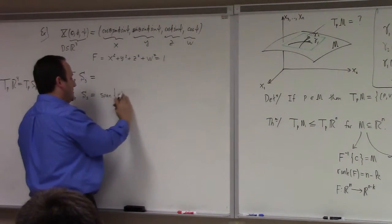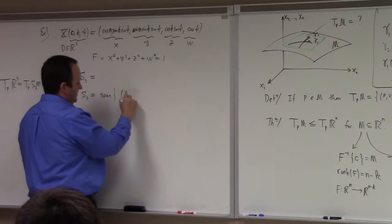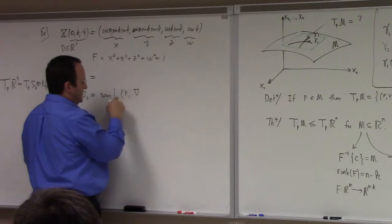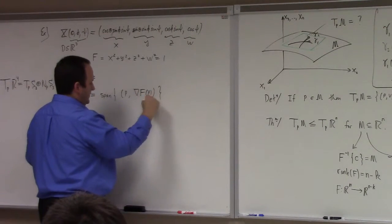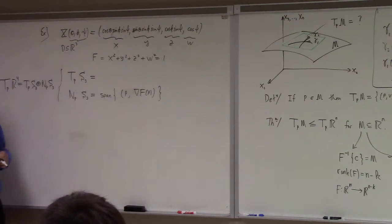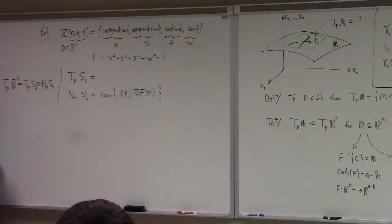Now, I'm forgetting my formalism here. So, P, attach it at the point P, take the gradient of f, you feed in the point P. There you go. So, that's the normal space at the point P. What's the tangent space? How do you calculate that?